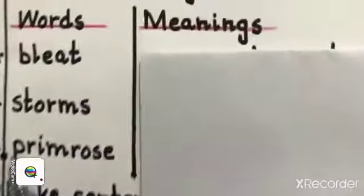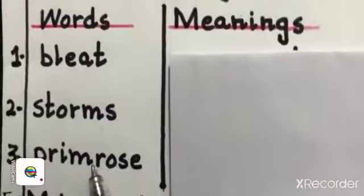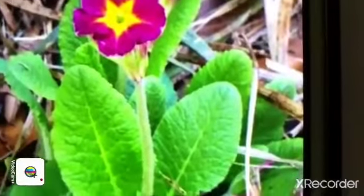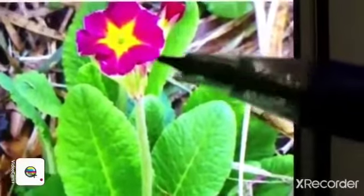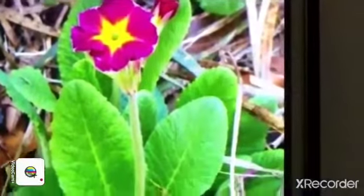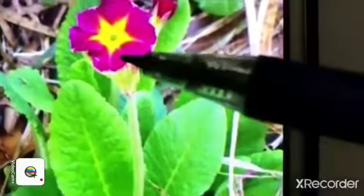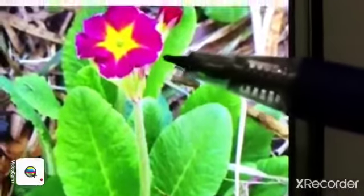Your next word is PRIMROSE. Look here in this picture. Primrose is a plant with red and yellow flower. So what is PRIMROSE? PRIMROSE is a plant with red and yellow flower.